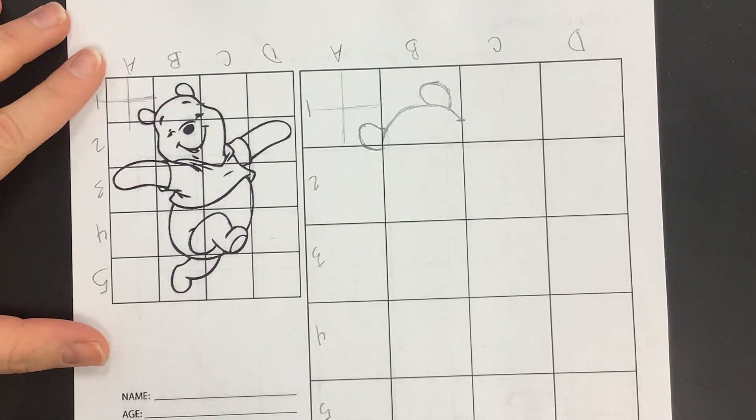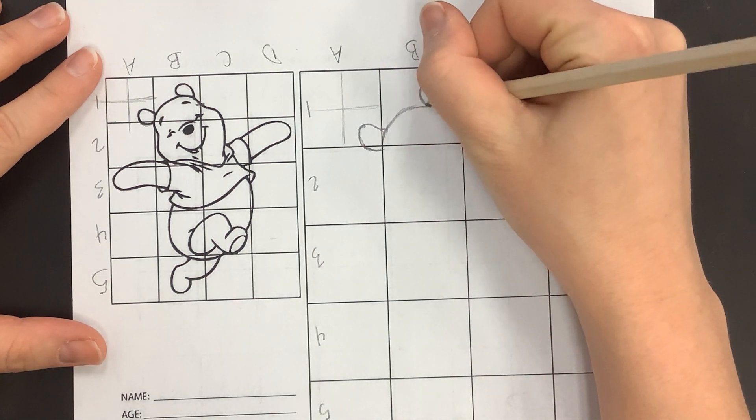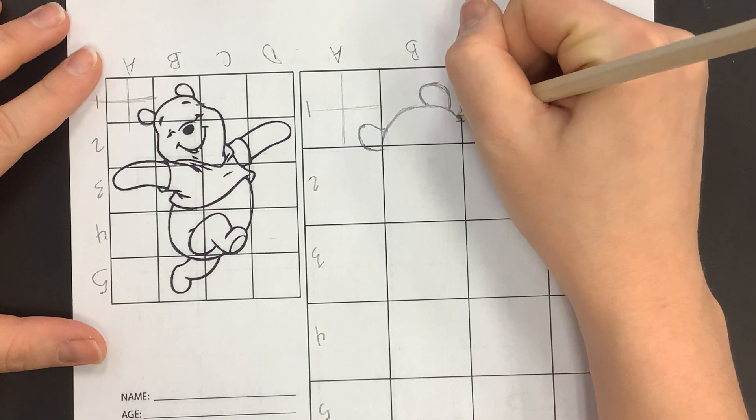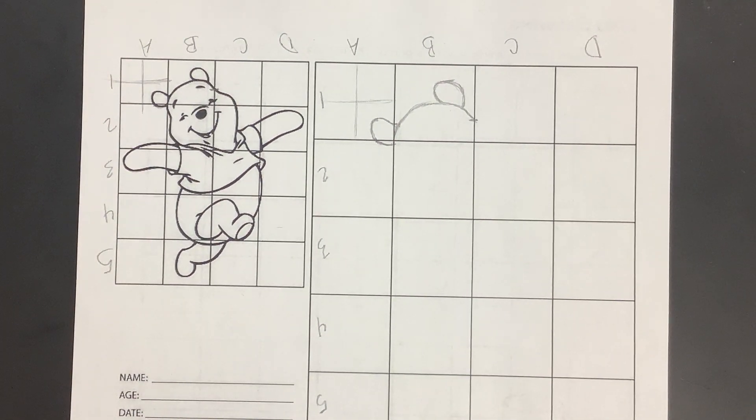Every now and again it's good to actually flip it right side up and double check. Yeah, that looks pretty accurate to what's there. You can tidy it up if you need to. But that's how you use the grid method.